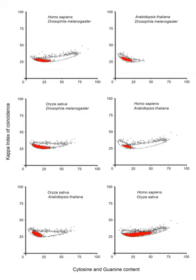The core promoter is the minimal portion of the promoter required to properly initiate transcription. It includes the transcription start site and elements directly upstream, including a binding site for RNA polymerase. RNA polymerase I transcribes genes encoding 18S, 5.8S and 28S ribosomal RNAs. RNA polymerase II transcribes genes encoding messenger RNA and certain small nuclear RNAs and microRNAs. RNA polymerase III transcribes genes encoding transfer RNA, 5S ribosomal RNAs and other small RNAs.